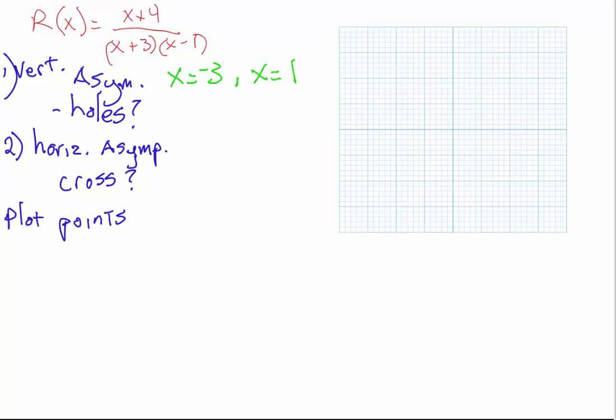Now, to determine if there are any holes, I check if any of the factors in the denominator can be canceled with any of the factors in the numerator. If they can, those vertical asymptotes become holes in the graph. In this case, there's no factor of x plus 3 nor x minus 1 in the numerator, so we have no holes in the graph.